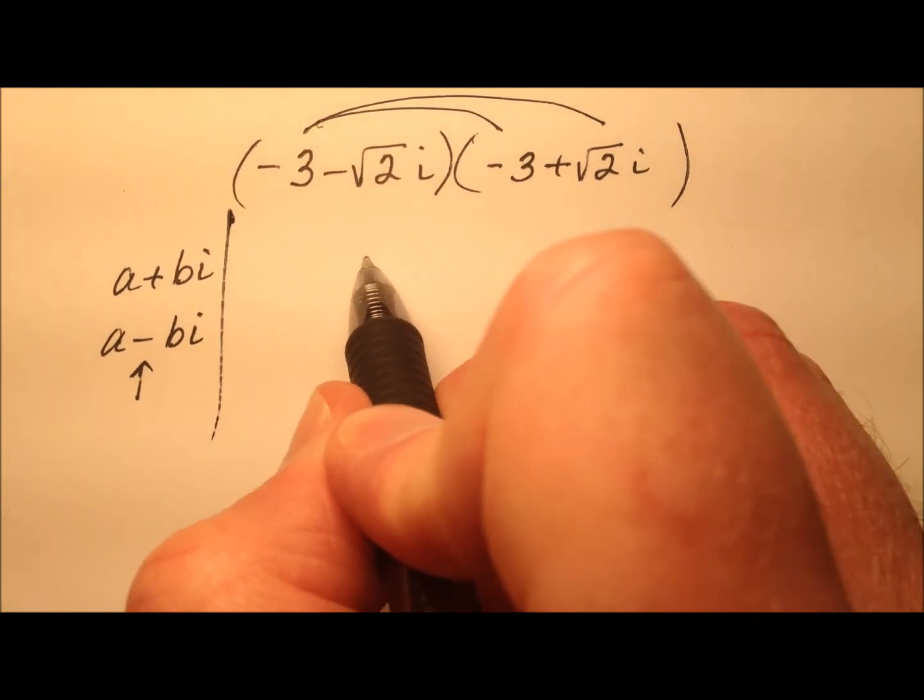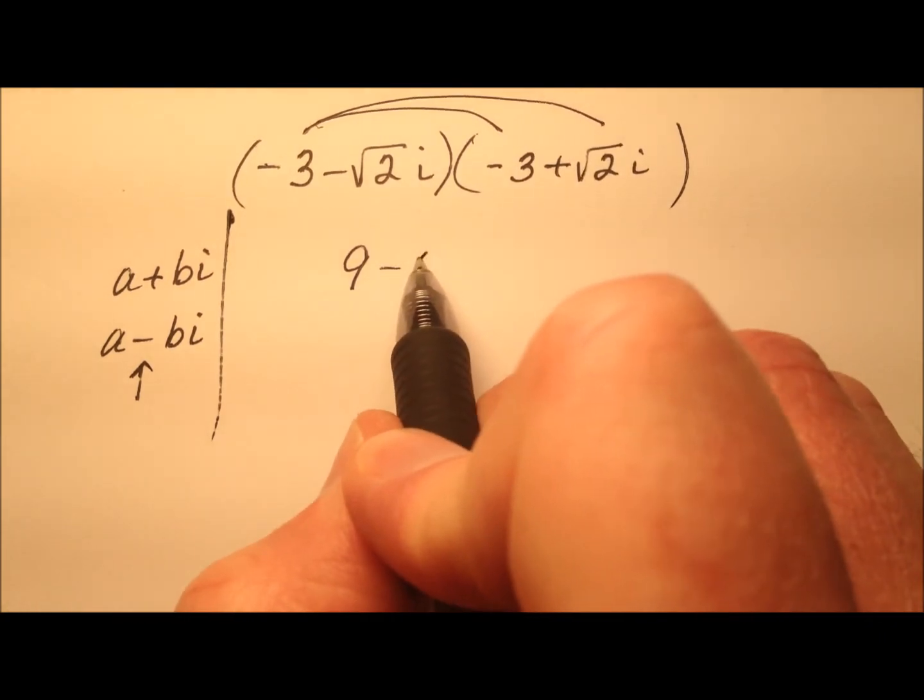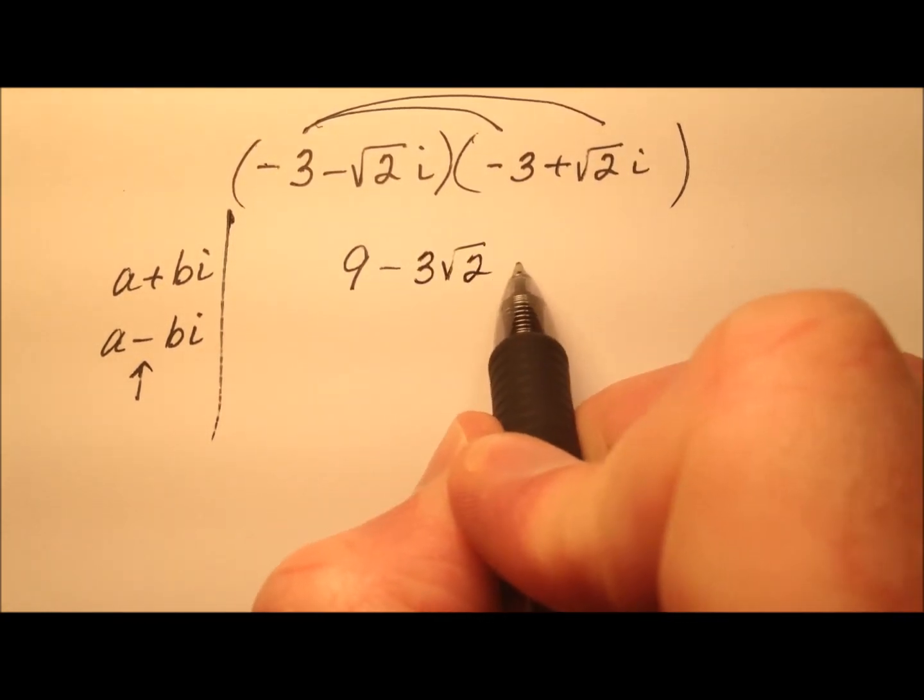Negative 3 times radical 2i will be minus 3 times the square root of 2i.